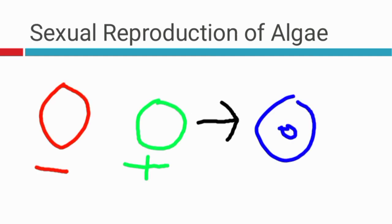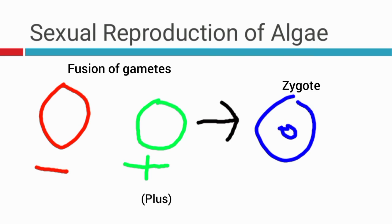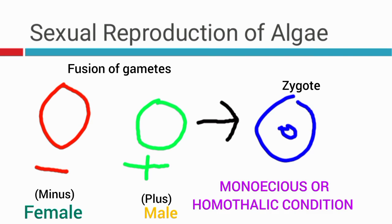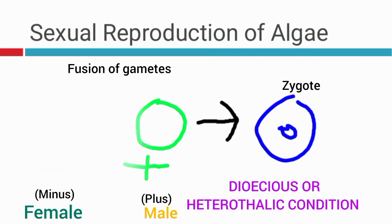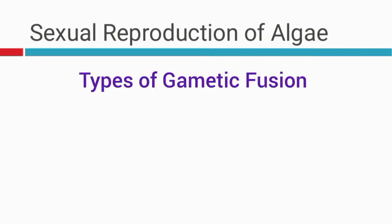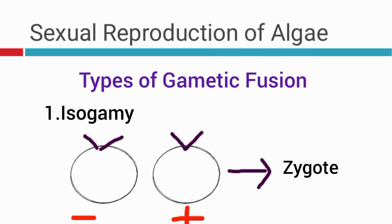For the sexual reproduction of algae, normally we understand that sexual reproduction is a fusion of two cells — that is, two sexual cells called the gametes. For algae, we call them the plus and the minus mating types or strains. The minus type or minus strain is the female, while the plus type is the male. If both strains or mating types come from one parent, it is known as monoecious or the homothallic condition. If they come from different parents, it is called dioecious or the heterothallic condition. We have different types of gametic fusion. One is isogamy — in isogamy, the mating types or strains have the same size and shape.